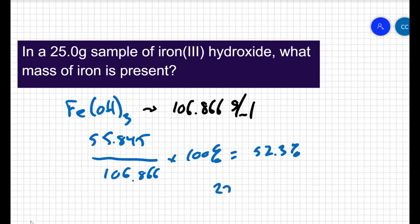So, if I take 25 grams and multiply it by 0.523, then I get 13.1 grams of iron. So, we can treat that as a percent composition problem.